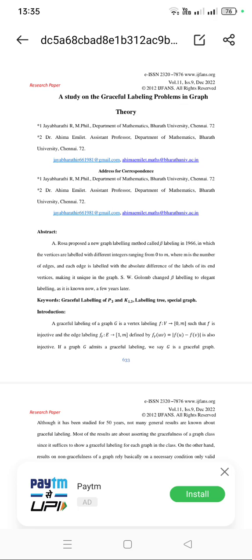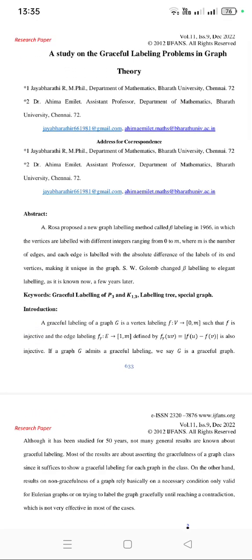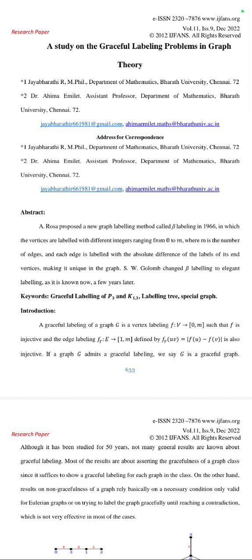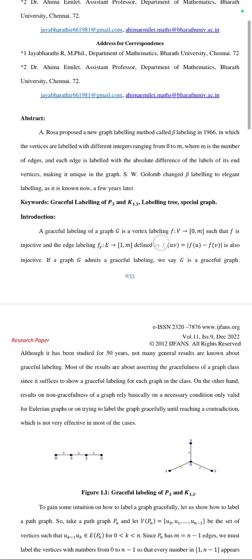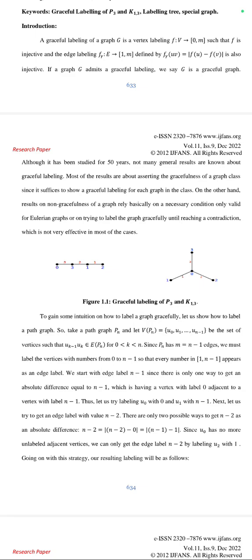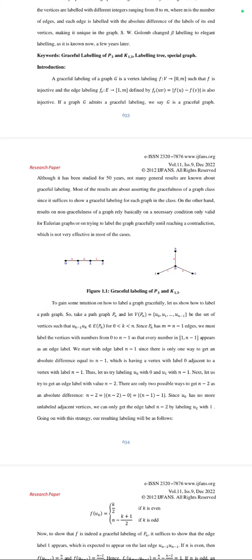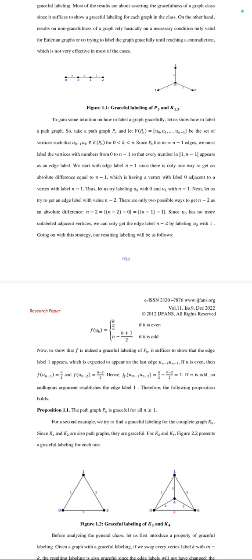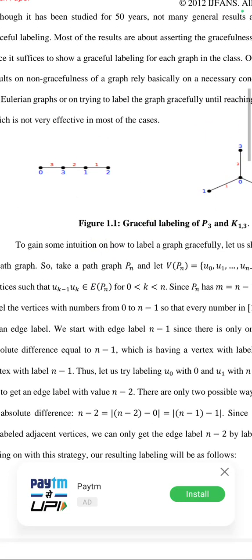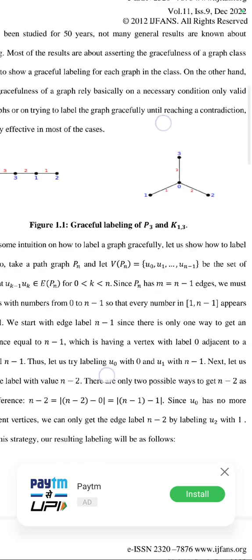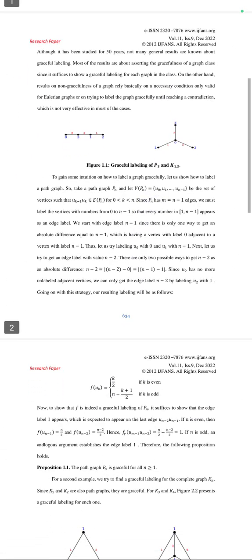If you select this type of topic, first of all you have to read the paper. Read the abstract thoroughly, and after that move to the definitions. Read the abstract, introduction, and everything, then read the concepts and definitions. For example, I took graceful labeling — you have to work with the graceful labeling definition using the graphs shown, such as figure 1.1.